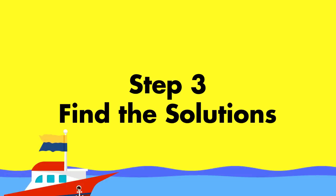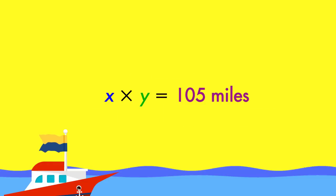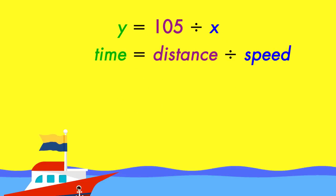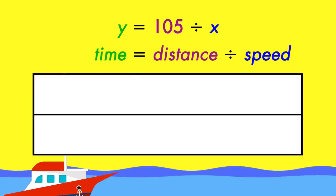To find the possible solutions, first rewrite the equation. Next, set up the equation so Y is on one side and X is on the other. Then draw a table to record results.